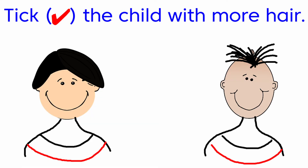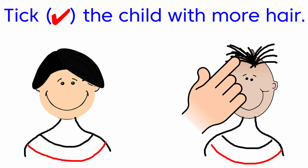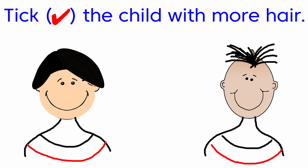Next, tick the child with more hair. Here there are two children. Among these children, we are going to tick the one who has more hair. See the first picture — the boy is having more hair. Look at the second picture — the boy is having less hair. So we are going to tick the first boy who is having more hair.